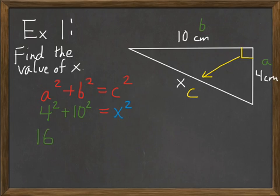I know that 4 squared is 16, so I can go ahead and put that in. I also know that 10 squared, 10 times 10 is 100. So I can write 16 plus 100 equals X squared. What can I do now? I can combine the 16 and the 100 and make 116. So I have 116 equals X squared.